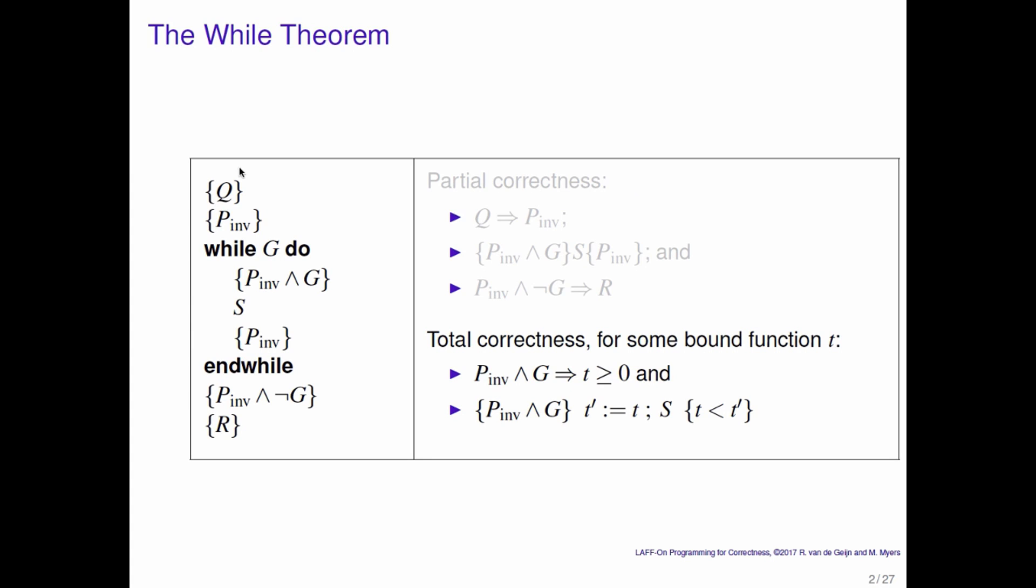Okay, so this is the While theorem. We already discussed partial correctness, how to prove that the loop is correct if we assume that it actually finishes, that eventually the loop guard becomes false. For total correctness, we need to prove a little bit more. And here is the idea.